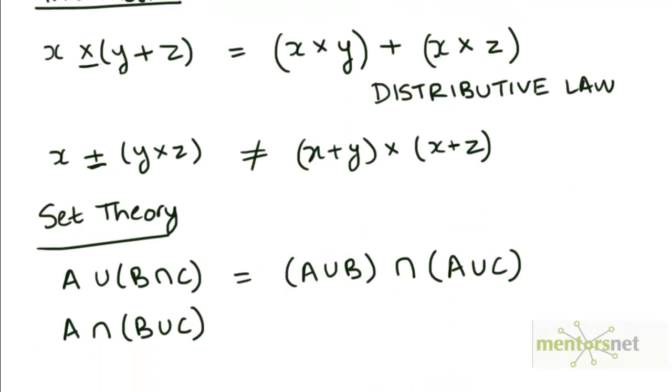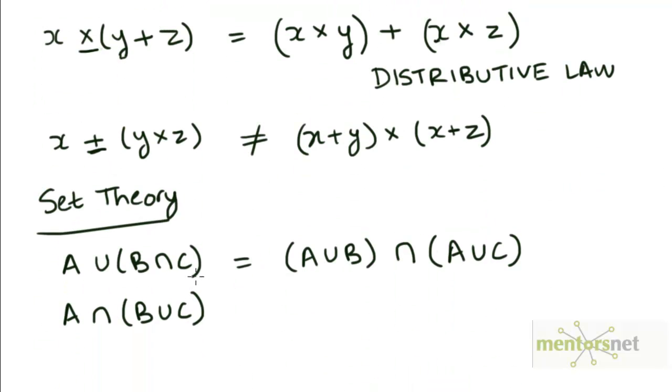In the same way, A union (B intersection C) equals (A union B) intersection (A union C) when we open the parentheses. Similarly, A intersection (B union C) equals (A intersection B) union (A intersection C).